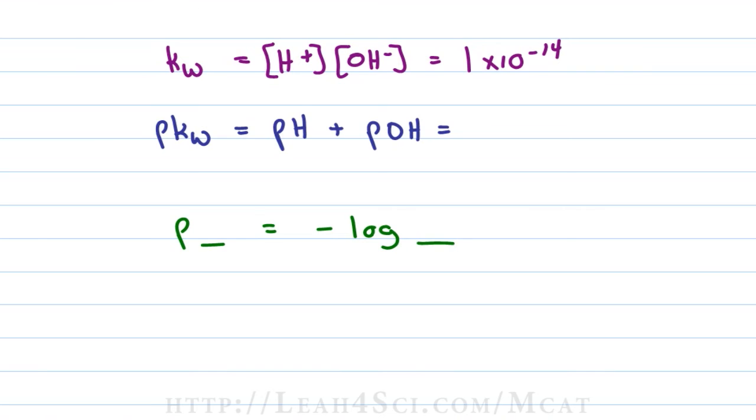And that means pKw is equal to pH + pOH, and then the p of 1 × 10^-14, we're using the trick that I taught in the math video series by simply taking that exponent, negating it so negative becomes positive, and that is equal to 14. And this is the second expression to know: pH + pOH is equal to 14.